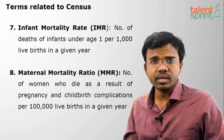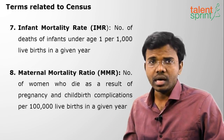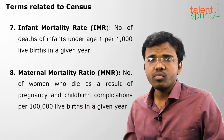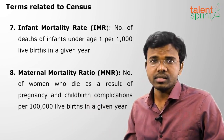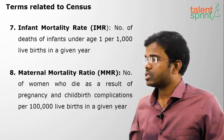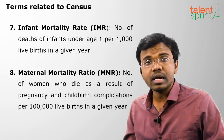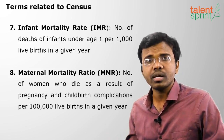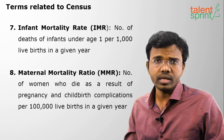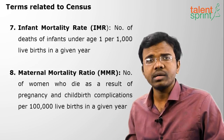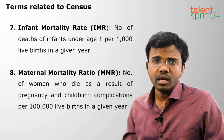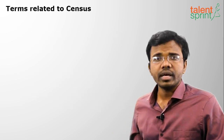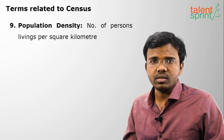The next term is maternal mortality rate (MMR). It is the number of women dying during pregnancies and childbirth complications per one lakh live births. That means per one lakh live births, how many women are dying during the delivery stage. If 20 people are dying, then 20 per one lakh will be the MMR.